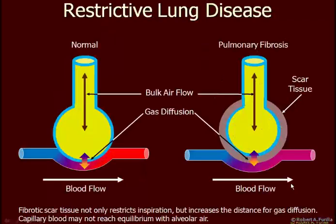Another problem that can occur is called a restrictive lung disease, and in this example I'm showing pulmonary fibrosis. Here I'm showing scar tissue building up around the alveoli, making it more and more difficult to inhale. Stretching the lung is becoming harder and harder, and the gas exchange is also beginning to decrease, which I'll discuss in another lecture.